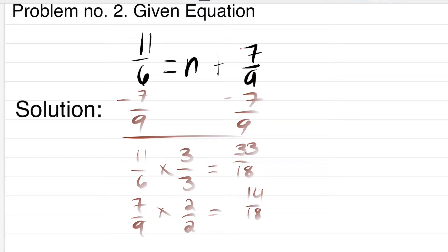And to put in equation, 33 over 18 minus 14 over 18 equals n. And our final answer for n is 19 over 18.